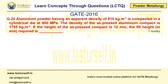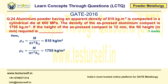Let's see the solution. They have given rho_A = 810 kg/m³, rho_G = 1755 kg/m³, and H_G = 12 mm (0.012 m). By comparing the masses, we get H_A = 0.026 m. Converting to mm, that is 26 mm.